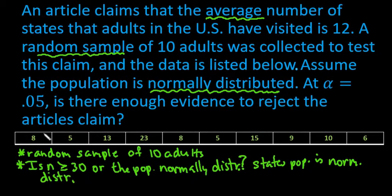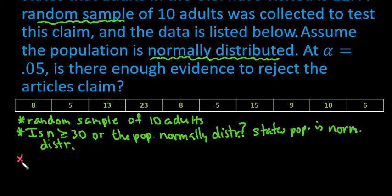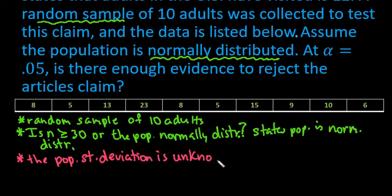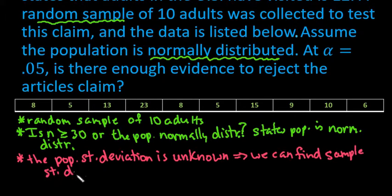The last thing that we have to have that signifies the difference between the z-test for the mean and the t-test for the mean is whether or not we know the population standard deviation. Depending upon your textbook, there are some different conditions that do show up. If your textbook is slightly different, just reference whatever your textbook says. The population standard deviation is unknown, but we can find the sample standard deviation.